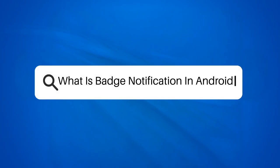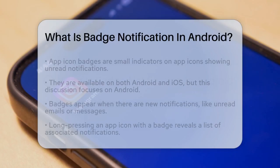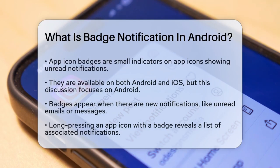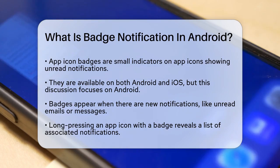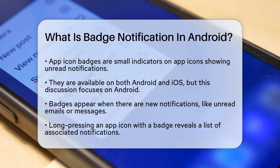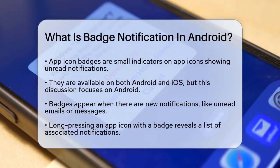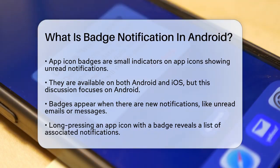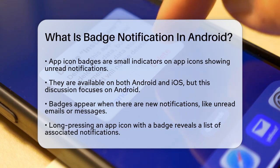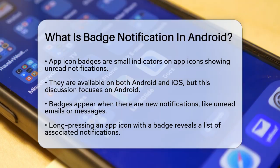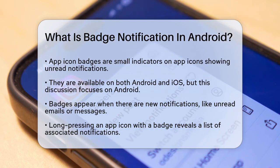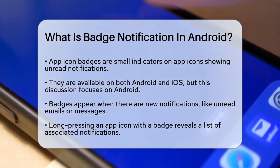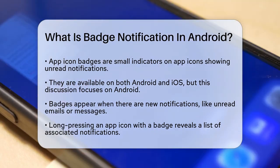What is badge notification in Android? If you've ever noticed those small numbers or dots on the corner of your app icons on your Android device, you're probably wondering what they are and how they work. These small indicators are called app icon badges or notification badges. They are a feature supported by both Android and iOS, but we're focusing on Android here.